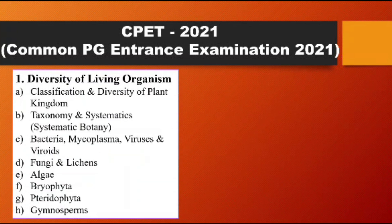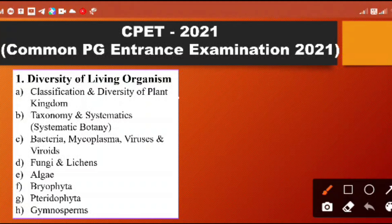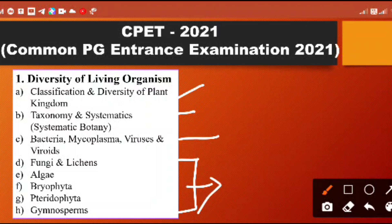The first point of the botany syllabus is Diversity of the Living Organisms. Many questions come from this topic, and many students think it is not important, but it is very important. You should follow classification and diversity of the plant kingdom, then taxonomical study and systematics, then bacteria, mycoplasma, viruses, and microorganisms, and then fungi, algae, bryophyta, pteridophyta, and gymnosperms.